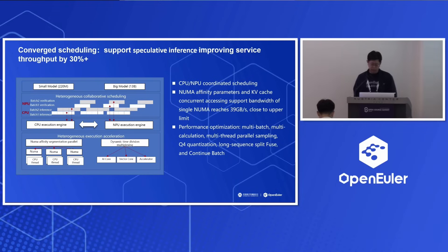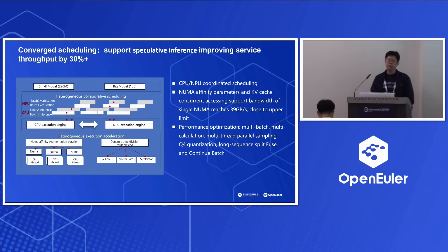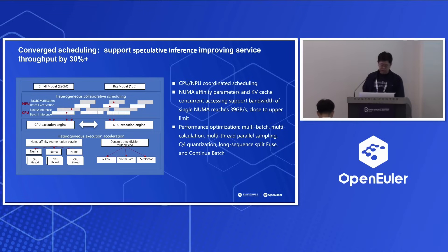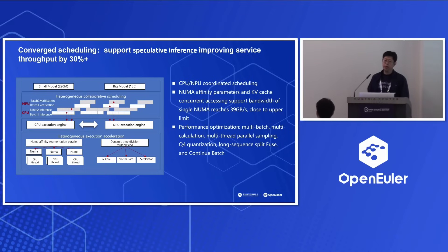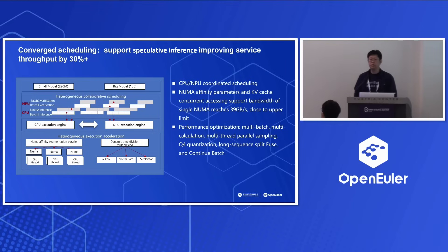For this scenario, our coordinated scheduling schedules the different kinds of operations between the host CPU and the NPU. Together with NUMA affinity, segmentation parallel, and also dynamic time division multiplexing of the NPU, with all those technologies we also get an inference throughput increase of almost 30%.